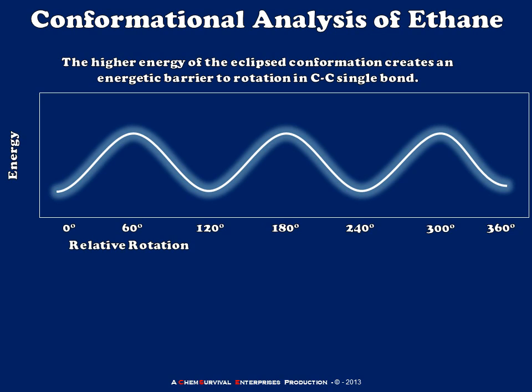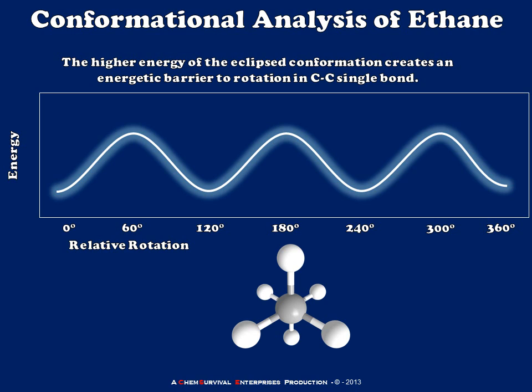So the conformational energy diagram for ethane looks something like this, with an energy axis on the vertical and relative rotation plotted as my independent variable. And when I look at a molecule of ethane down the carbon-carbon bond like this, I can clearly see why we have local minima and maxima.